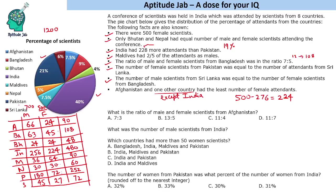Now we can answer the questions. The ratio of male to female scientists from Afghanistan is 66 to 24, which simplifies to 11:4. The number of male scientists from India is 256. Countries with more than 50 female scientists: looking at the table, these are India, Maldives, and Pakistan.